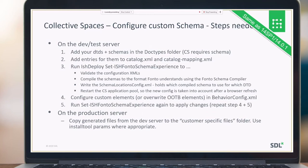The steps a customer should follow to configure their own custom schema are: add DTDs and schemas in the types folder and add entries to the catalog XML and catalog mapping XML, then run the relevant ISH Deployer command to validate the configuration XML, compile the schemas, write the schema location config, and restart the Collective Spaces application pool. After that, configure custom elements or overrides in behavior config XML, run the ISH Deployer commandlet again, and copy the generated files to the production server.